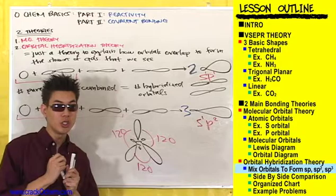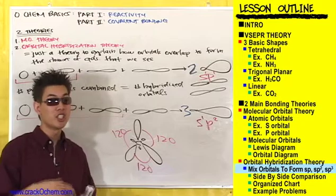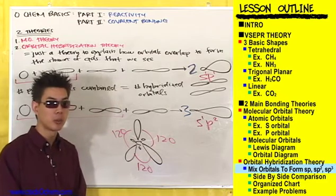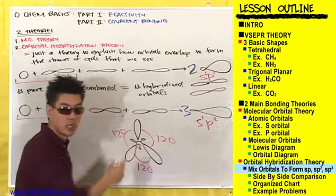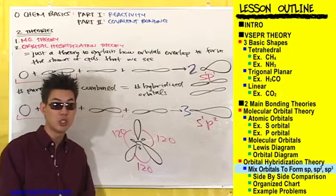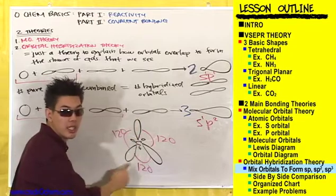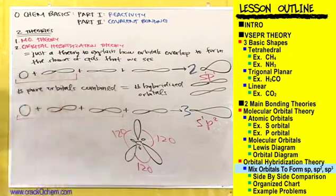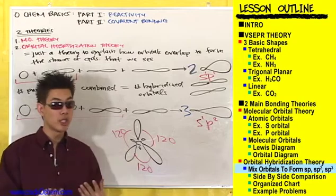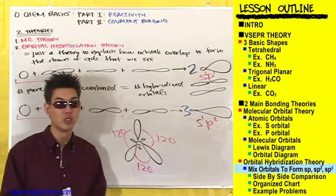What shape does this look like? Trigonal planar. To reinforce what I said about hybridized orbitals being the only way to make sigma bonds — single bonds — how many hybridized orbitals did we make here? Three. So how many sigma single bonds can a hybridized sp2 atom make? Three, right? One bond for every hybridized orbital. So if an atom has sp2 hybridization, it's going to have three sigma bonds, it's going to be trigonal planar, and have 120-degree bond angles.